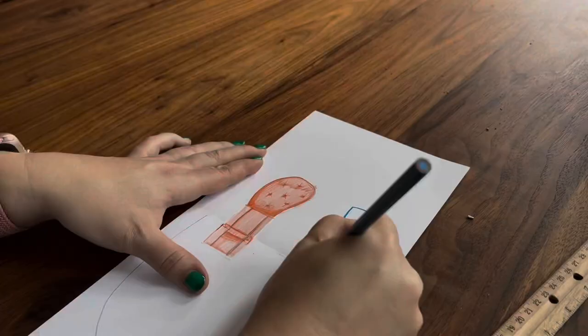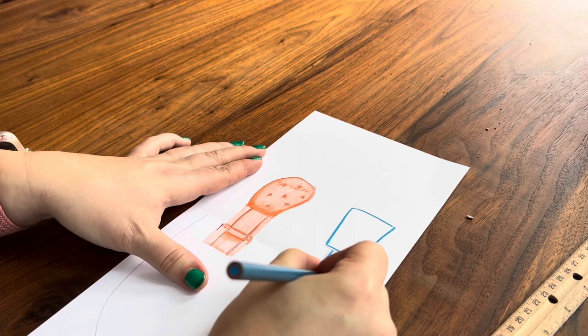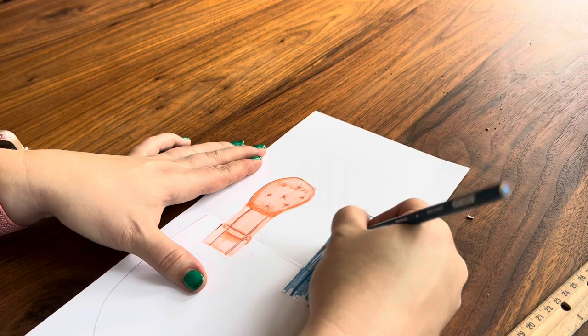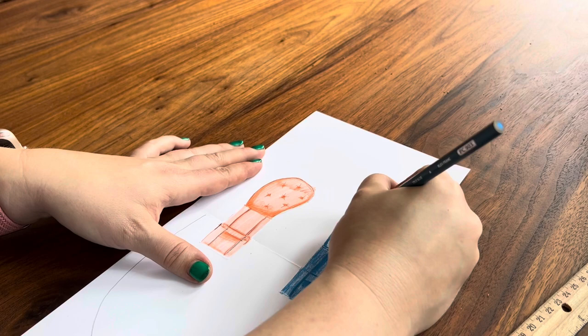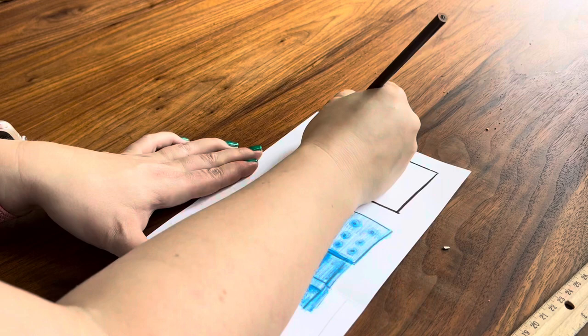And then I can do the same for a blue chair. And next I can decide about what I want on the wall. Will it be pictures? Photographs? Will it be a window? You can decide.